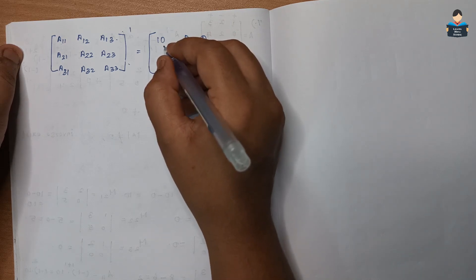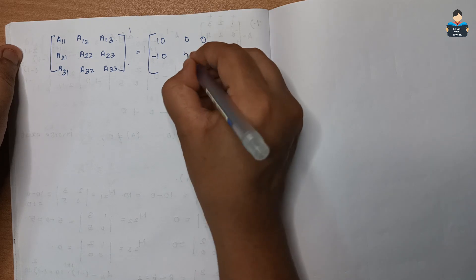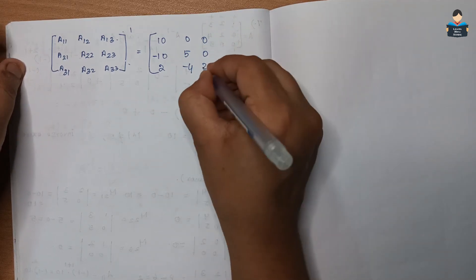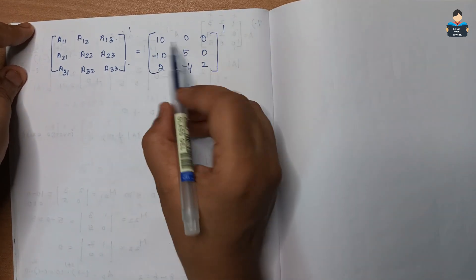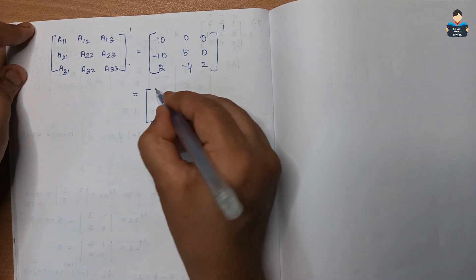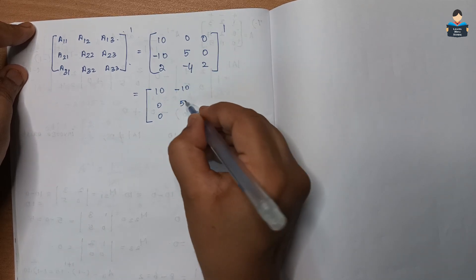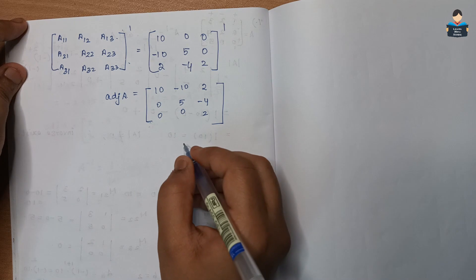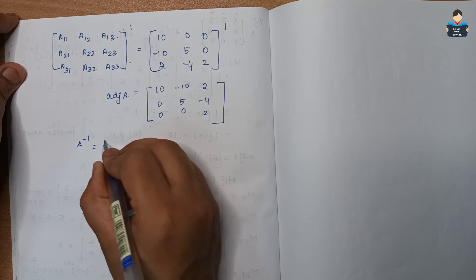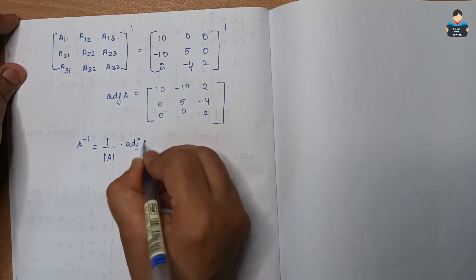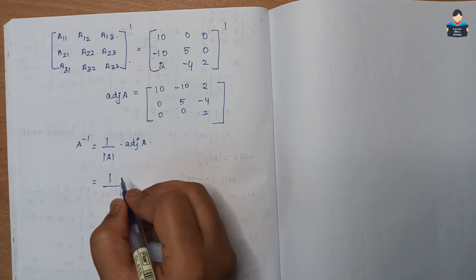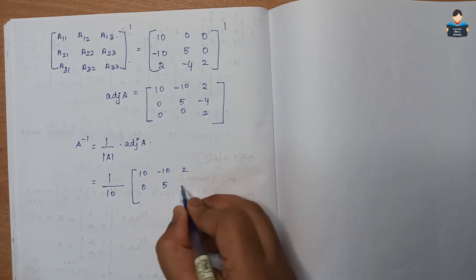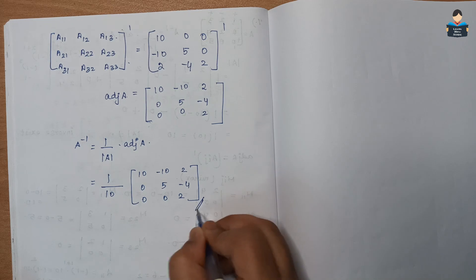The cofactor matrix is [[10, 0, 0], [-10, 5, 0], [2, -4, 2]]. Taking the transpose, adjoint of A equals [[10, -10, 2], [0, 5, -4], [0, 0, 2]]. Now A inverse equals 1 by determinant of A into adjoint of A, giving 1 by 10 into [[10, -10, 2], [0, 5, -4], [0, 0, 2]]. This is the final answer.